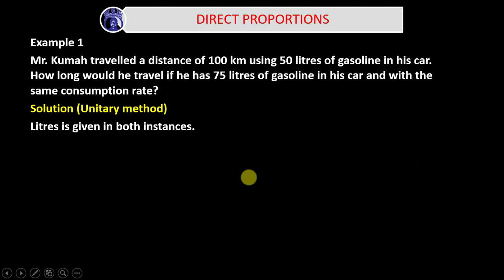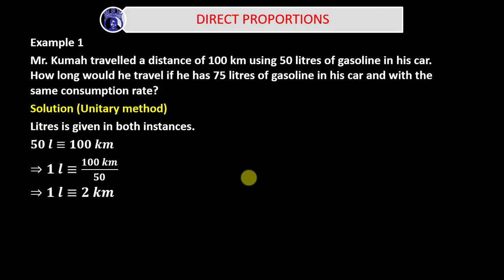Liters is given in both instances. So, 50 liters is equivalent to 100 kilometers. That implies 1 liter is equivalent to 100 kilometers divided by 50, which simplifies to 1 liter equals 2 kilometers. Now, if 2 kilometers is covered using 1 liter of gasoline, how much distance will be covered using 75 liters? Since 1 liter covers 2 kilometers, 75 liters will be equivalent to 75 times 2 kilometers, giving us 150 kilometers.